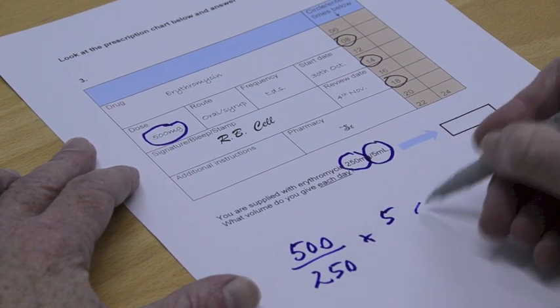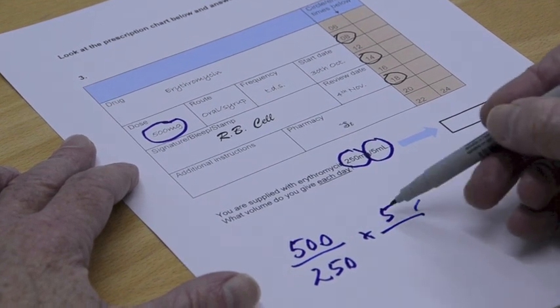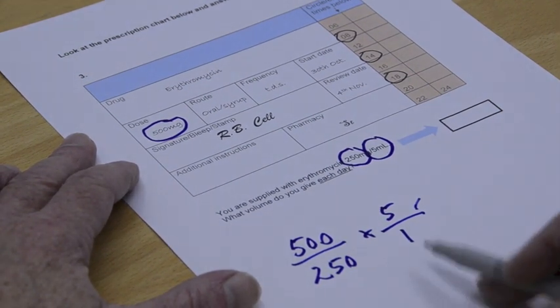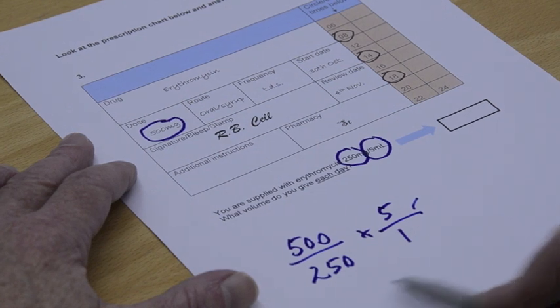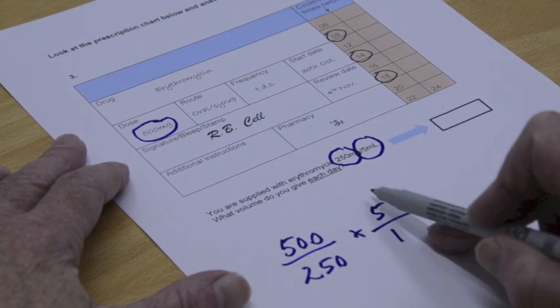So excuse my blotch there. I tend to put 5 over 1 just to remind me at the end of it there's something to multiply on the bottom and something to multiply on the top.